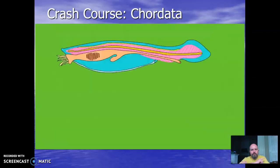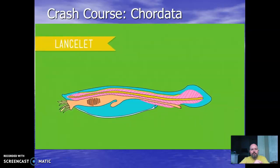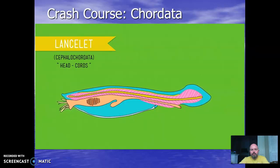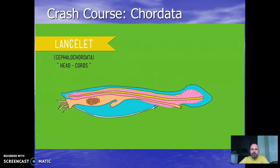Each of these four synapomorphies is present at some point in every chordate's life cycle. The lancelets, also known as Cephalochordata — literally 'head cords' — are one of the three subphyla of chordates. Unlike almost all other chordates, these tiny brainless invertebrate filter feeders retain all four characteristics for their entire lives.